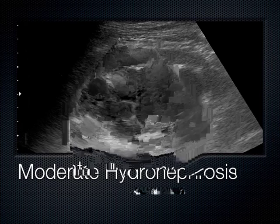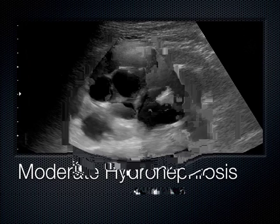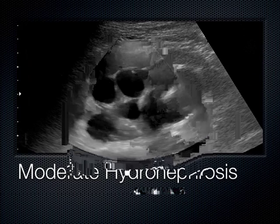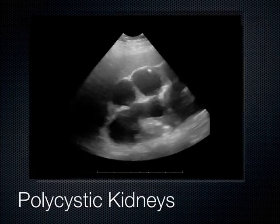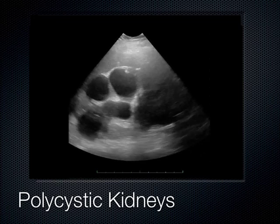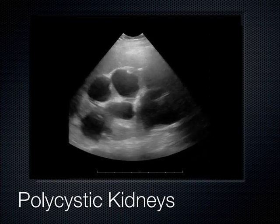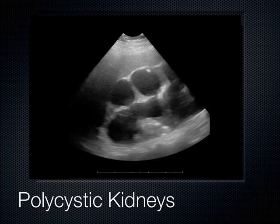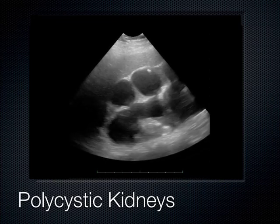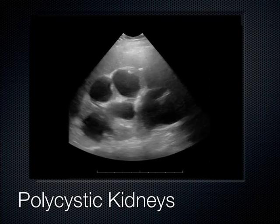Here's what polycystic kidney disease looks like on ultrasound — multiple cysts seen out in the cortex, with several visible throughout the kidney. It's bilateral and can affect other organs; sometimes you can see cysts in the spleen, around the liver, and ovaries can look similar when they're polycystic.